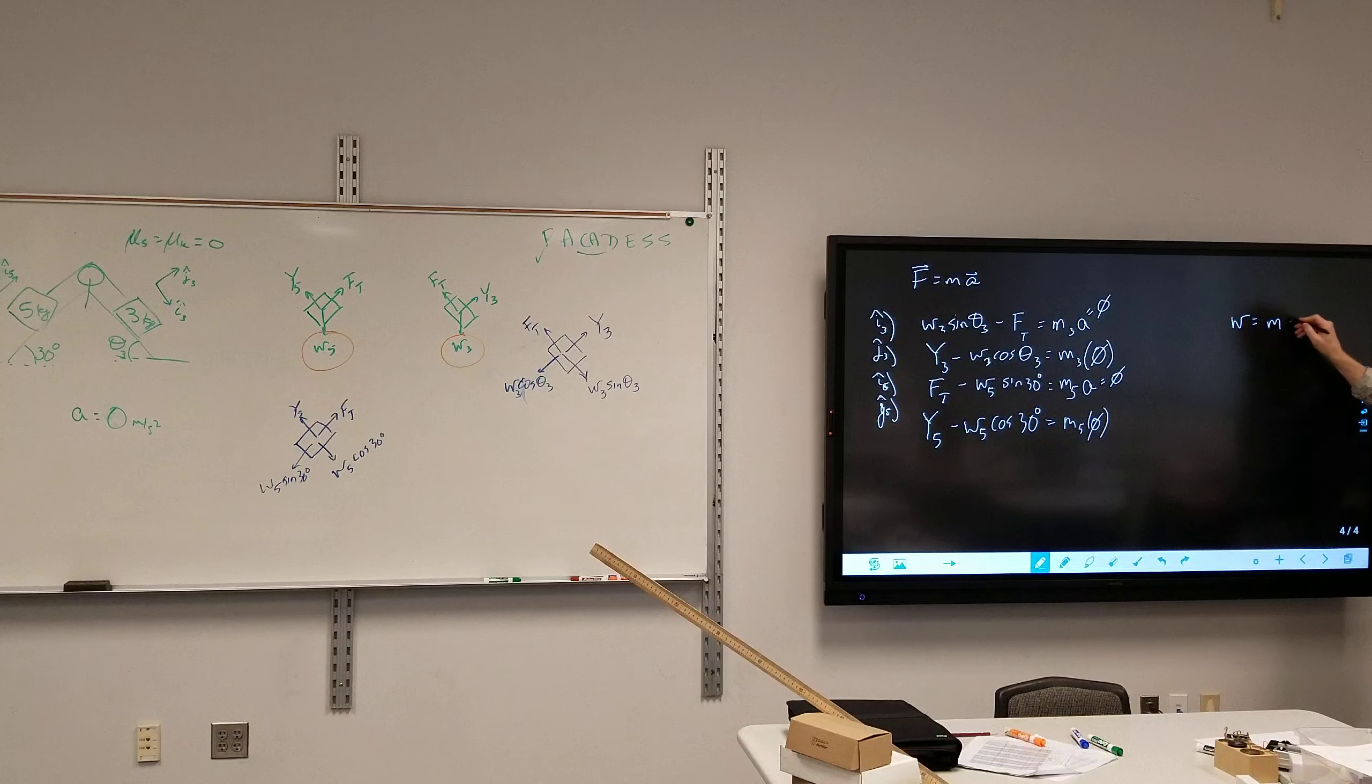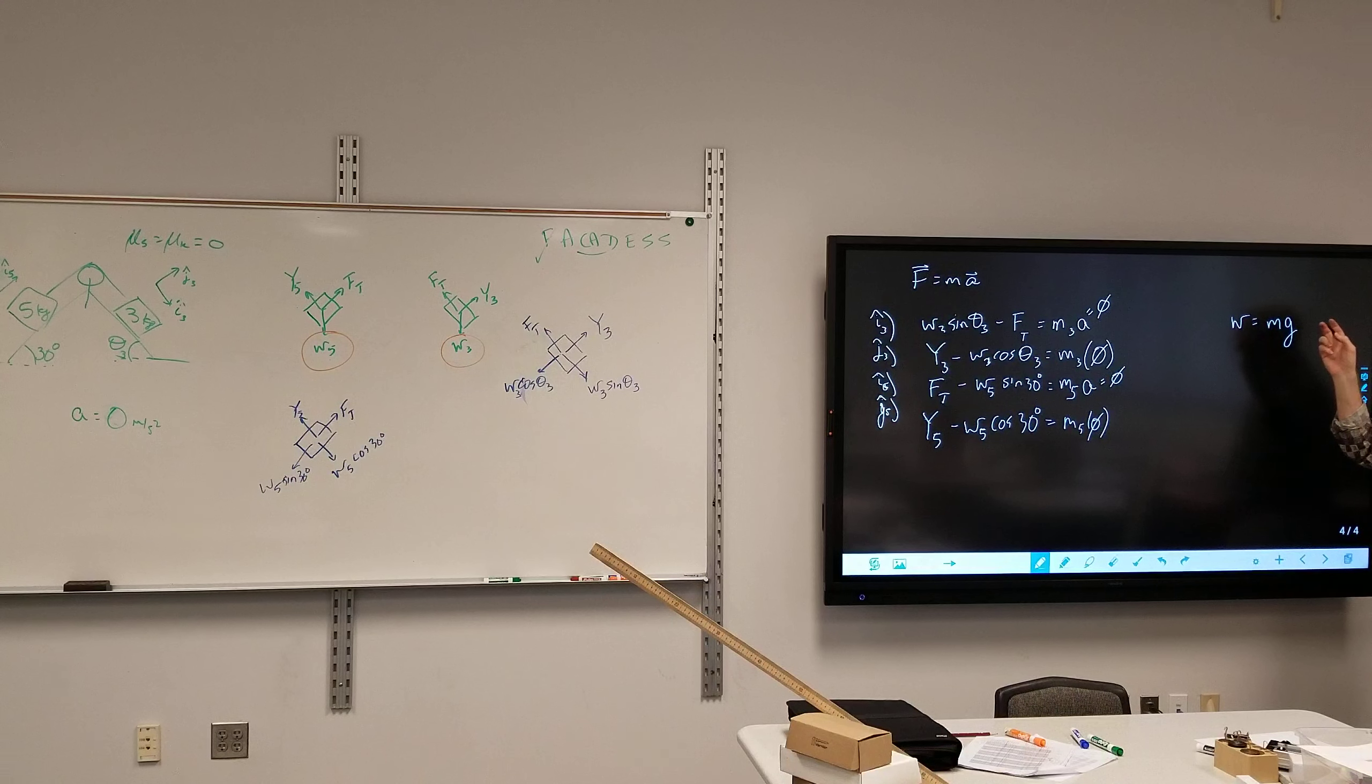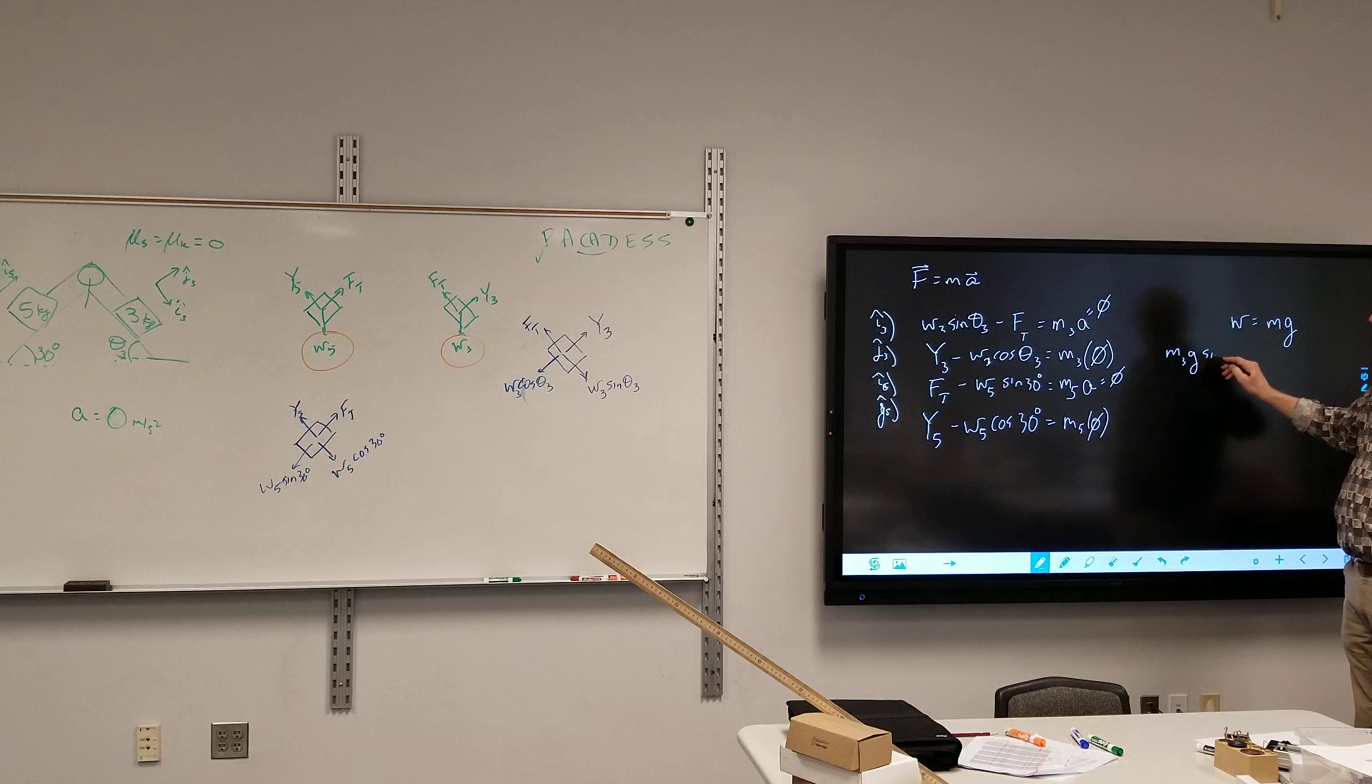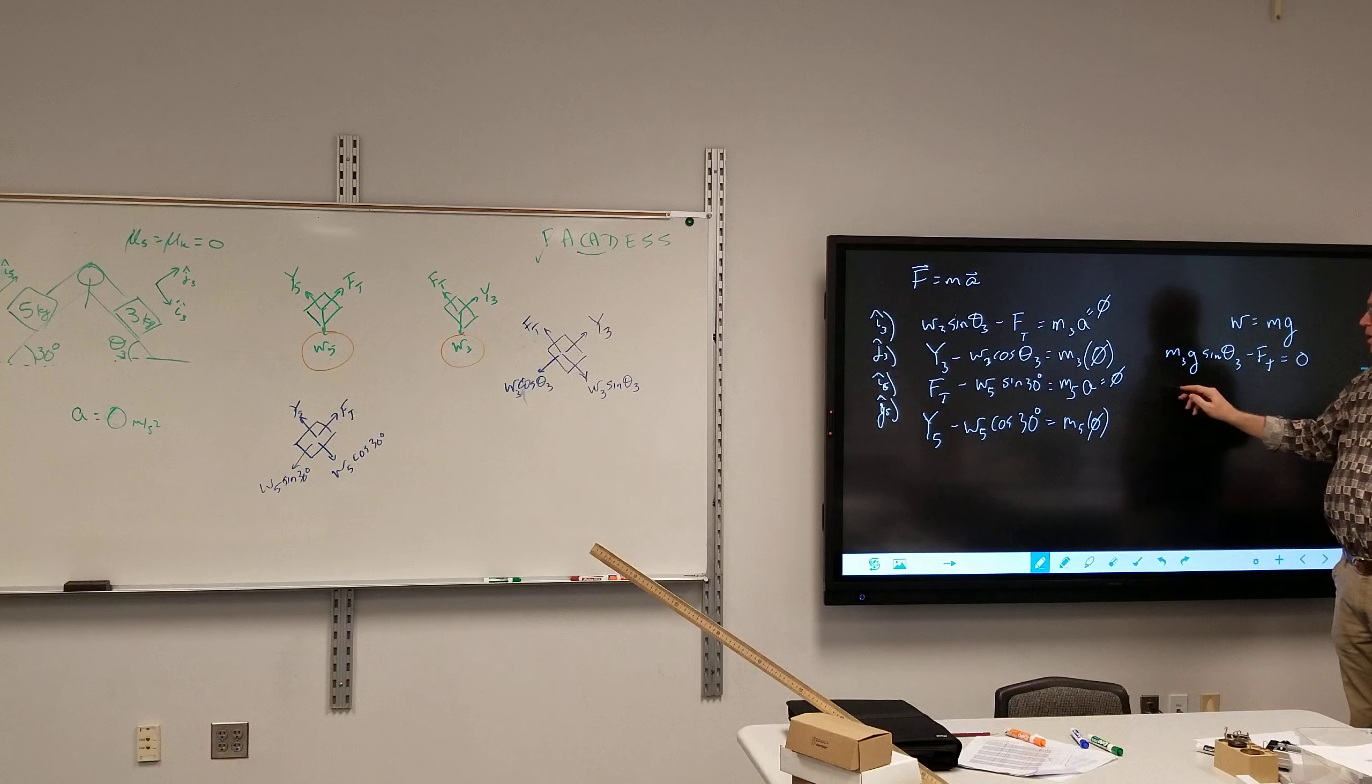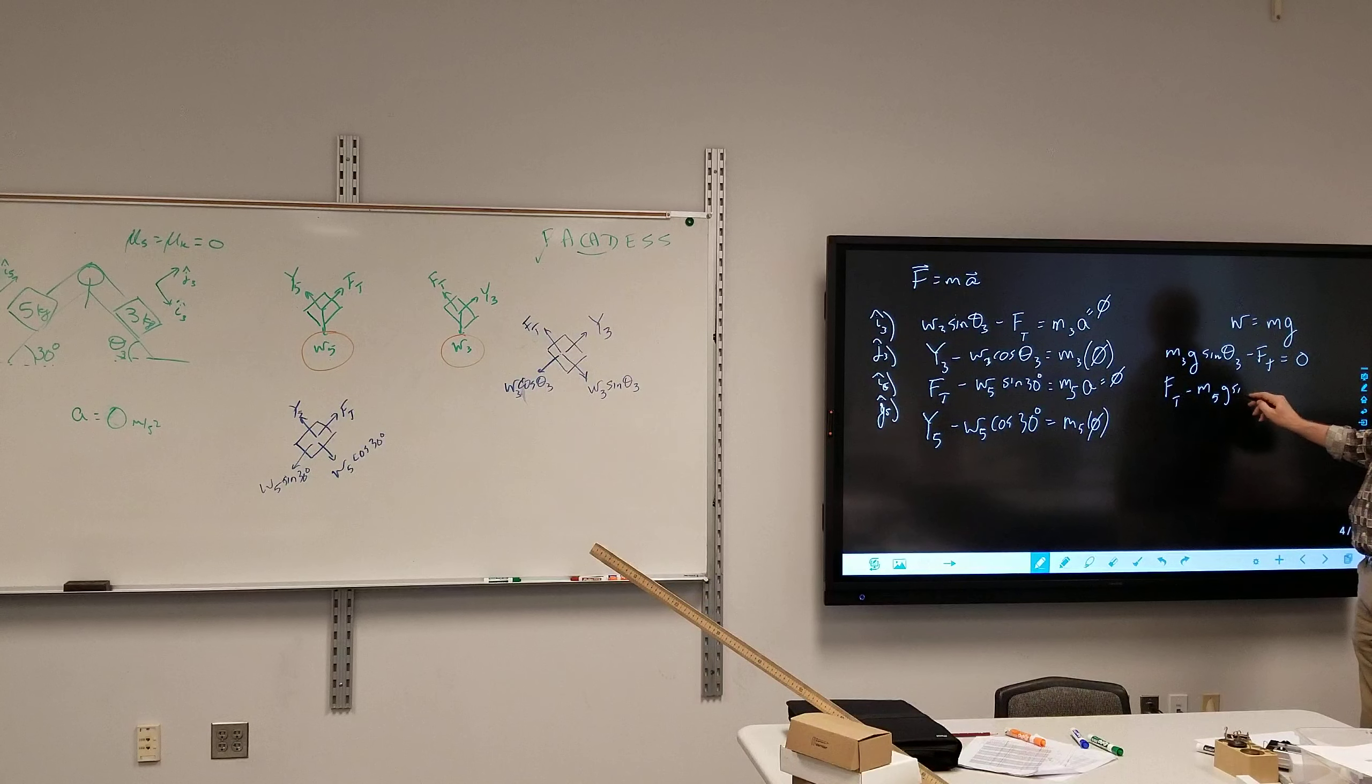What does this little g stand for? Force of gravity. Oh. Weight is the force of gravity. That's the acceleration due to gravity. There we go. All right, so we did the substitution. So I have M3g sine theta 3 minus the tension equals zero.